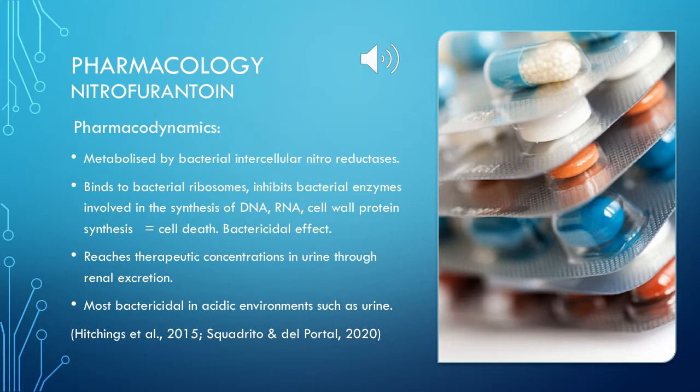Pharmacodynamics: once nitrofurantoin is taken up and metabolised by bacterial intracellular nitroreductase, the immediate metabolites produced bind to bacterial ribosomes and inhibit bacterial enzymes involved in the synthesis of DNA, RNA, cell wall proteins, and other metabolic enzymes, causing cell death by a bactericidal effect. Nitrofurantoin reaches therapeutic concentrations in urine through renal excretion and is most bactericidal in acidic environments such as urine.